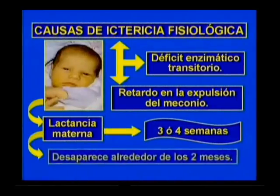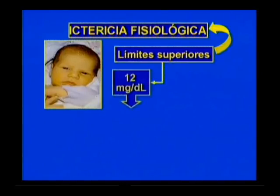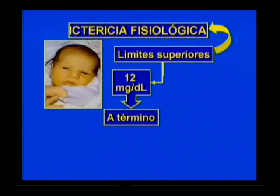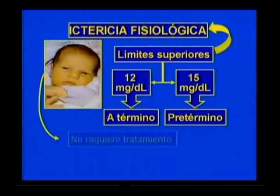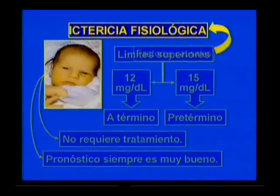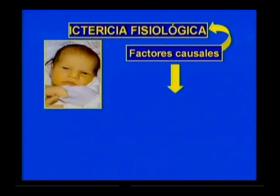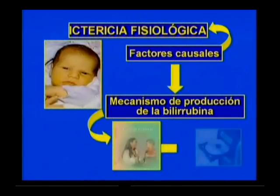La ictericia por lactancia materna puede desaparecer alrededor de los 2 meses. Se consideran límites superiores de la ictericia fisiológica los valores de 12 mg/dL para el neonato a término y 15 mg/dL para el pretérmino. La misma no requiere tratamiento y el pronóstico siempre es muy bueno. Para profundizar en los factores causales, puedes realizar un esquema del mecanismo de producción de la bilirrubina, revisando la literatura básica del tema que aparece en el CD de la asignatura.